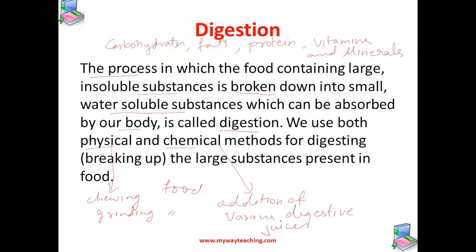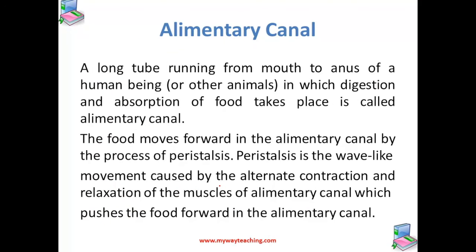Clearly the process of digestion takes place inside our body. Before we describe the human digestive system in detail, we should know the meaning of elementary canal. Elementary canal is also known as gut or the digestive tract. A long tube running from the mouth to the anus of a human being or any other animal, in which digestion and absorption of food takes place, is called elementary canal.